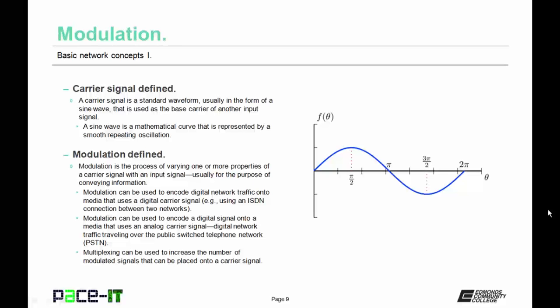A carrier signal is a standard waveform, usually in the form of a sine wave, that is used as the base carrier of another input signal. A sine wave is a mathematical curve that is represented by a smooth repeating oscillation. Modulation is the process of varying one or more properties of a carrier signal with an input signal, usually for the purposes of conveying information. Modulation can be used to encode digital network traffic onto media that uses a digital carrier signal, as in using an ISDN connection between two networks. Modulation can also be used to encode a digital signal onto media that uses an analog carrier signal, as in digital network traffic traveling over the public switched telephone network, or PSTN.